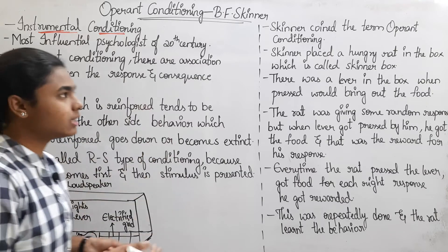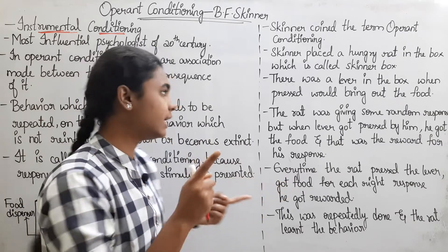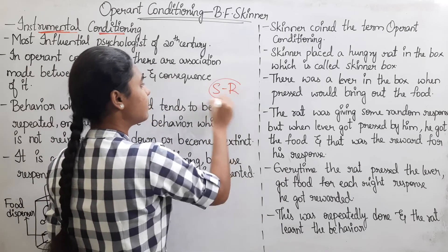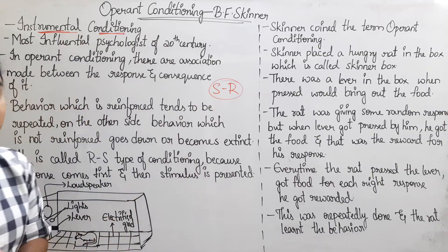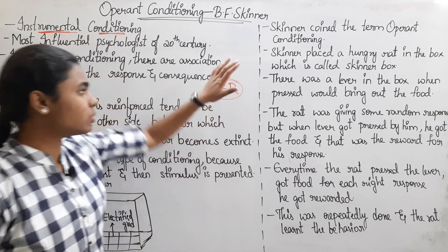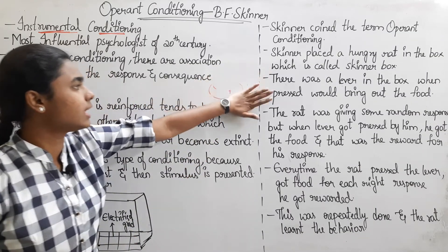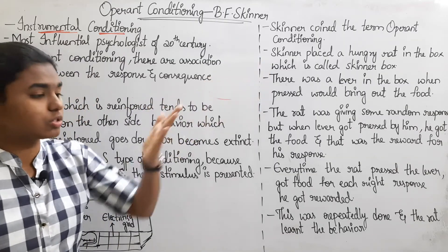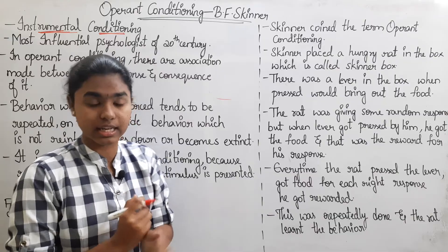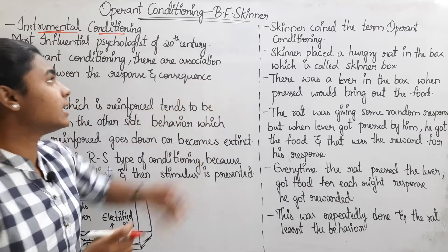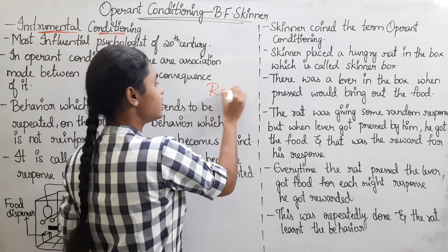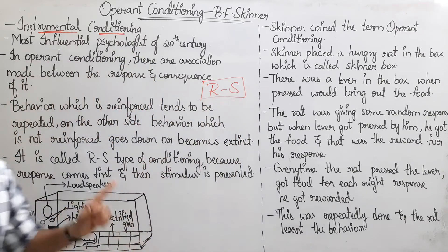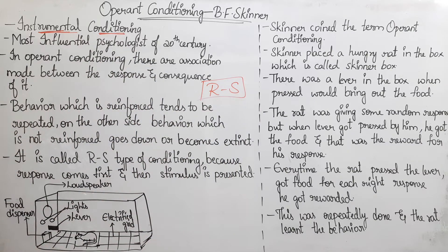If we are talking about an experiment, we are talking about Classical Conditioning. In Classical Conditioning, the order is Stimulus then Response — for example, food is the stimulus. But in Operant Conditioning, the response comes first and then the stimulus follows. That is the key difference.